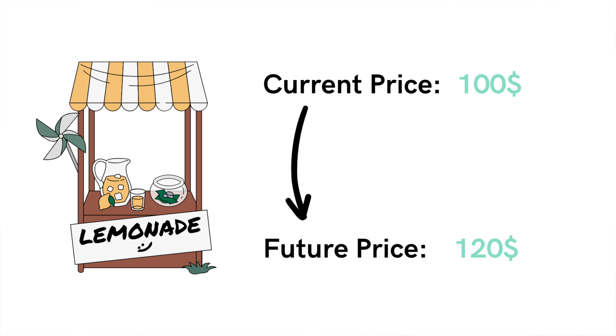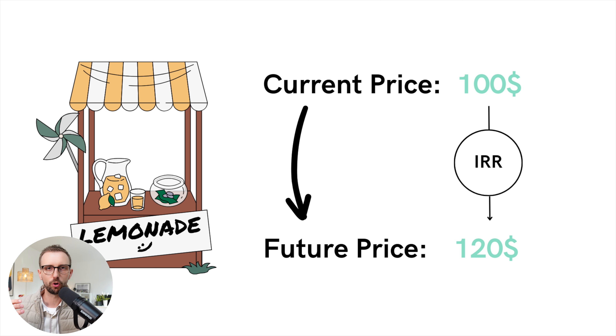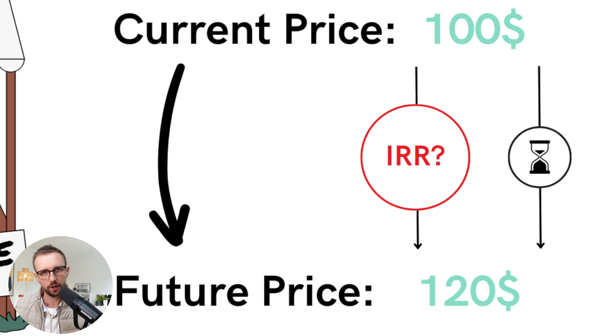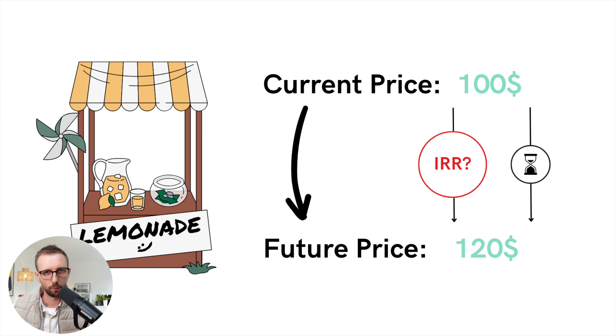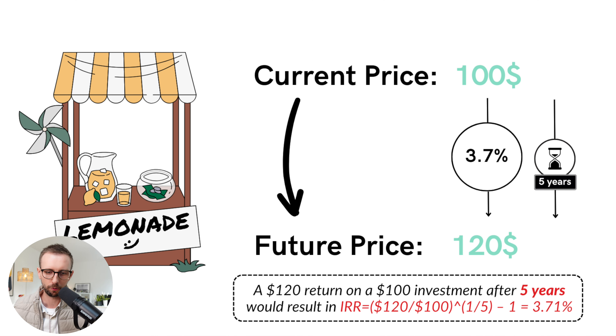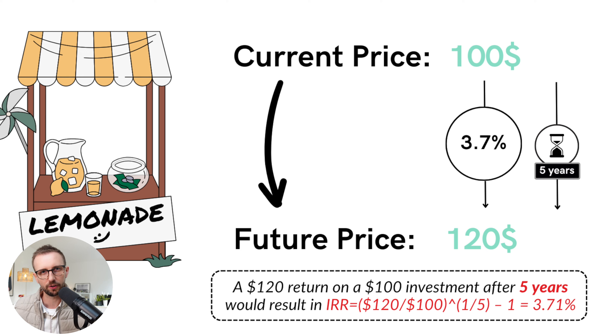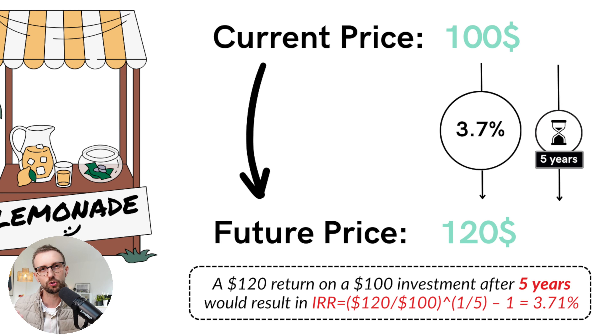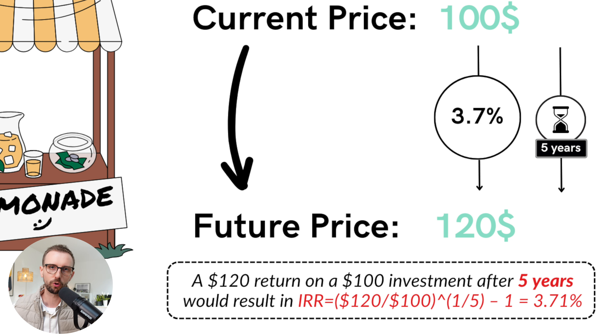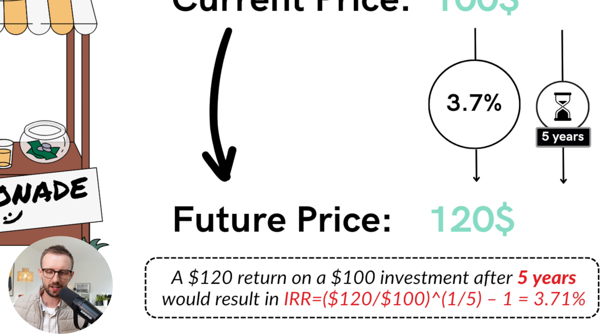To determine whether the $100 investment you would make today is attractive, you will have to calculate the so-called internal rate of return required to get from $100 to $120. And to do that you will need to be aware of the time frame — over what period will the business grow in value. If we assume the price increases from $100 to $120 over a five-year time period, then it becomes a math problem and we can figure out the rate of return is going to be 3.71%.